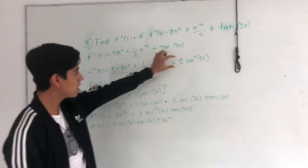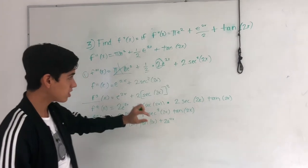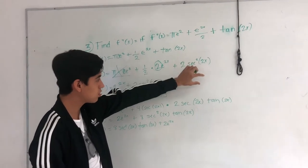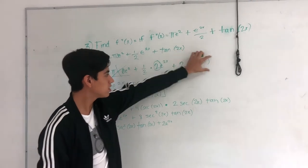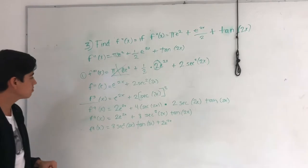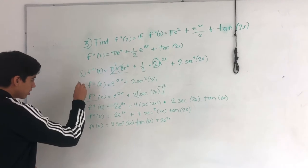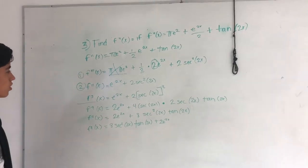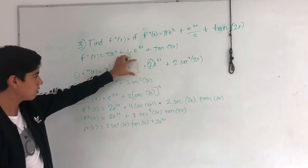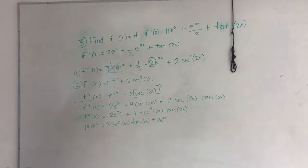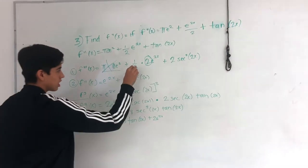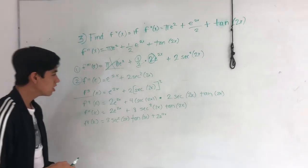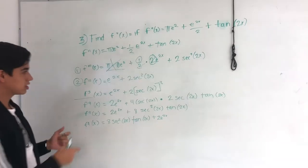You also have to differentiate 2x, and the derivative of 2x is 2. Then in the second step, you multiply: one half times 2 equals 1, so you can cancel out this two.